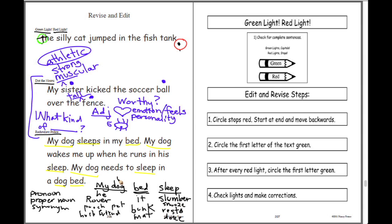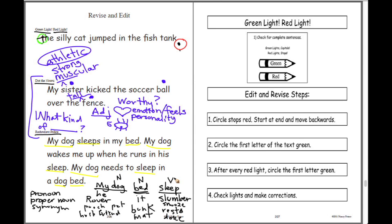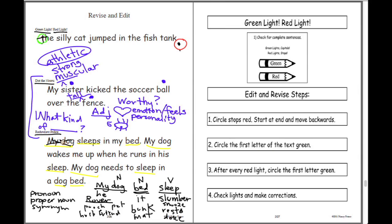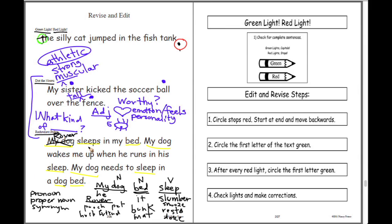Now that I've brainstormed all the different ways I can say these words, what am I going to do? 'My dog' — I'm going to replace it with 'Rover' because that is his name. If I'm going to use somebody's name, I should always do it at the beginning. So: 'Rover sleeps in my bed.' I've used 'bed' once — that's fine. Now 'sleeps' is underlined — do I want to say 'sleeps' or use another word? Rover slumbers — let's use 'slumbers.' 'Rover slumbers in my bed.'